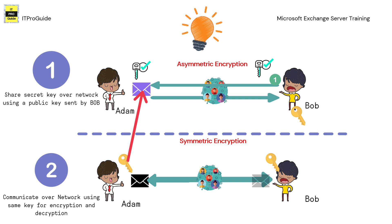We know the advantages and the drawbacks of both encryption methods. We are going to take the advantage of both — and that is what the TLS protocol actually does. The problem with symmetric encryption is sharing the key over the internet, where there is a chance of losing the key and that may break data privacy. So if we can share this secret key first using asymmetric encryption, and after that the two parties communicate using symmetric encryption, that adds both security and fast communication.